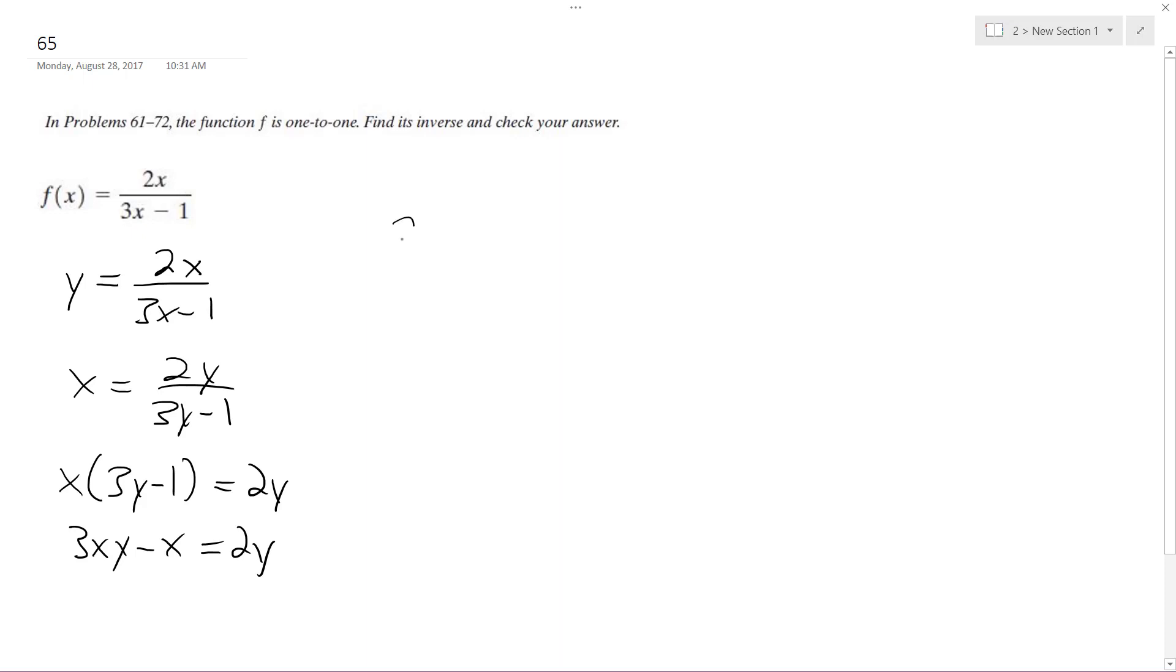So now I'm going to get 2y minus 3xy equals negative x. Pull out a y, get 2 minus 3x equals negative x. So we get y is equal to negative x over 2 minus 3x. And I like it better like this. I like x over 3x minus 2.